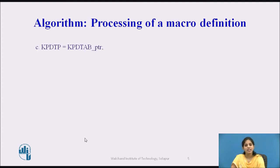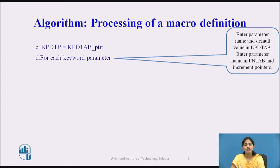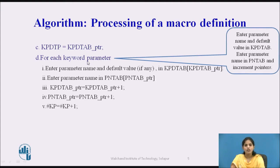Next, in the C part, we initialize the Keyword Parameter Default Table pointer. This variable KPDTP appears in the MNT table. In the D part, for each keyword parameter, we enter that parameter name and the default value, if any, into the KPDT tab, which stands for Keyword Parameter Default Table.